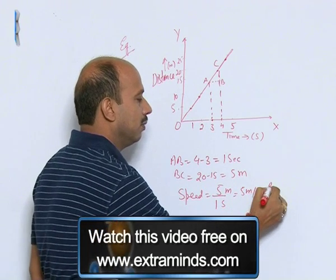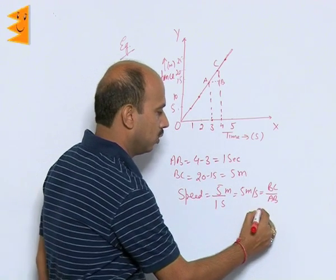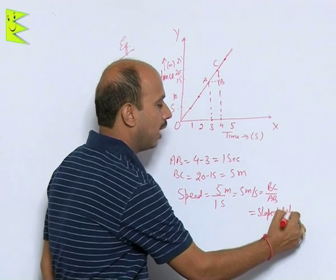This we can say BC upon AB, which is equal to slope of distance time graph.